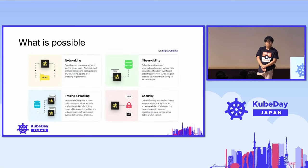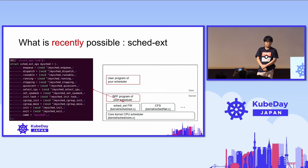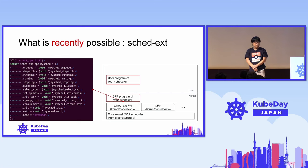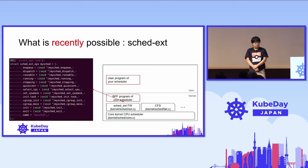The capability of eBPF opens up a lot of possibilities, from networking, vulnerability, tracing and monitoring, to security enhancements. One of the recent advancements in eBPF is the scheduler. This feature allows you to create your own scheduler without changing kernel code, which could be useful for customizing and optimizing system performance based on your specific workloads.